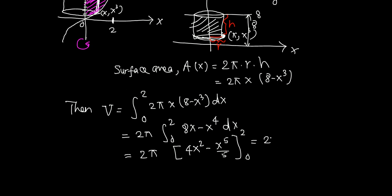2 pi outside, evaluate this function at 2. Replace x by 2, so 4 times 2 squared, 2 squared is 4, so 4 times 4 is 16. That's the upper limit, minus the lower limit. Plugging in 0, we get 0, minus 2 to the fifth, 32 over 5.